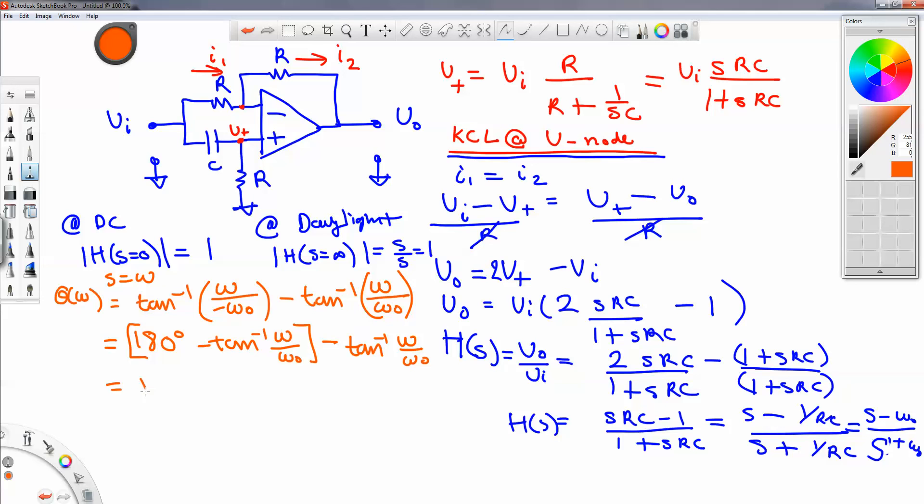So, simplify these terms. You have minus 2 tangent inverse of omega over omega naught.